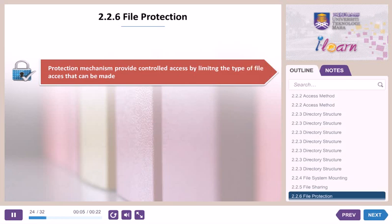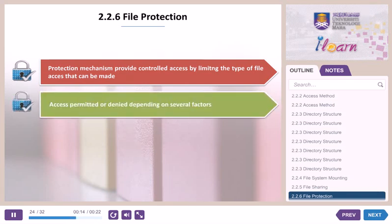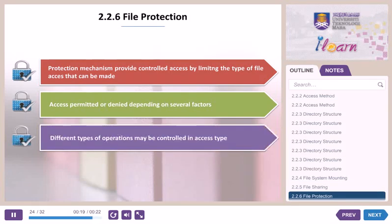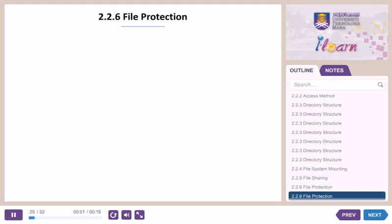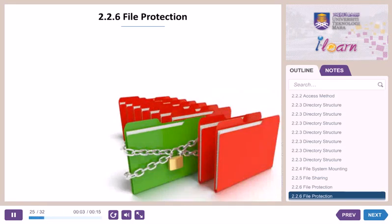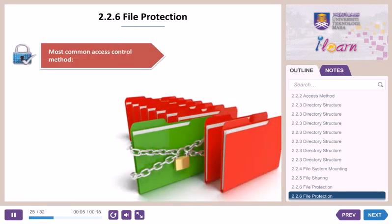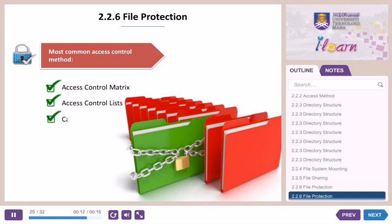2.2.6 File Protection. Protection mechanisms provide controlled access by limiting the type of file access that can be made. Access is permitted or denied depending on several factors, one of which is the type of access required. Different types of operations may be controlled in access type. The most common access control methods are: access control matrix, access control lists, capability lists, and lockword control.